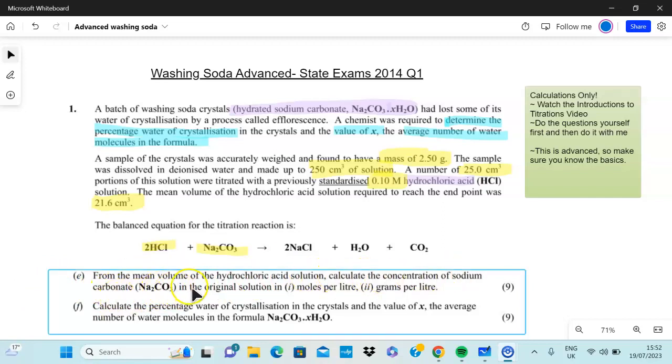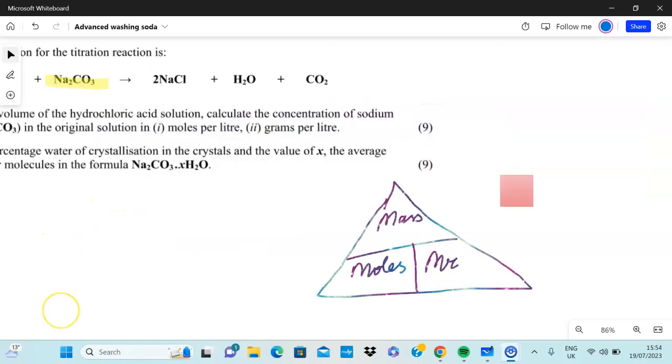Let's do the first one. That's question E: from the mean volume of the hydrochloric acid solution, calculate the concentration of sodium carbonate Na2CO3 in the original solution in moles per liter and grams per liter. Whenever I see those words 'moles' and 'grams,' the first thing I think of is my triangle. This is the triangle that I use to survive chemistry. This triangle literally will help you to find this formula that you can use to find whatever you need to find.